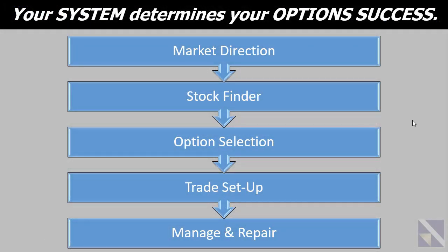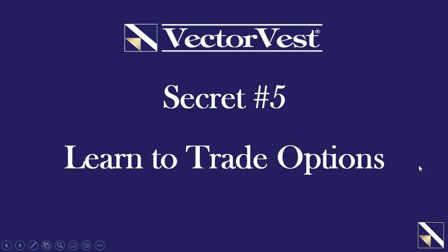The key — and ultimately what will determine your success — is having a system in place that allows you to follow a process. That includes market direction, stock finder, finding the proper underlying stock, the option selection setup, and then most importantly, managing and repairing that trade. Once you are in the trade, understanding how to manage it is critical. These are the very important steps we take to make sure we put probabilities in our favor. Those are just some of the reasons to look deeper into secret number five from the seven secrets to making money with VectorVest and learn how to trade options.